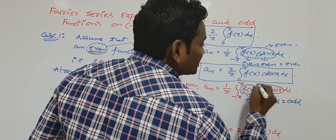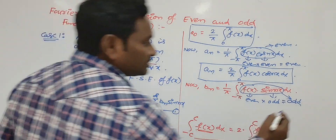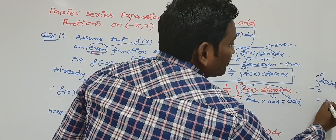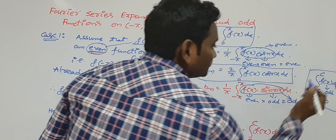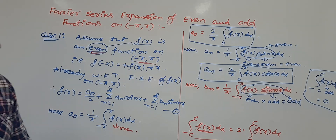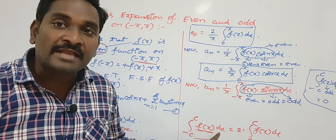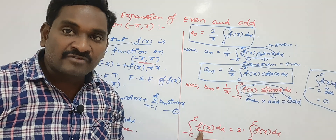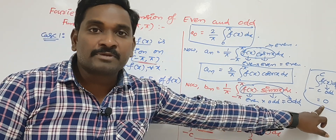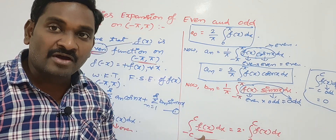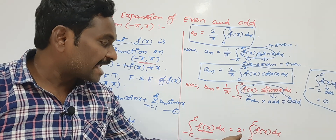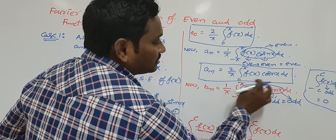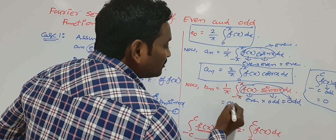The sin(nx) function is an odd function. So even times odd gives an odd function, meaning the entire integrand function is odd. From the definite integration property, ∫₋c^{+c} f(x) dx = 0 if the function is odd. That is why bₙ = 0.